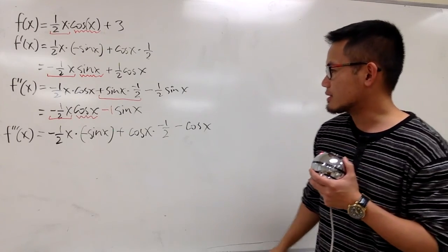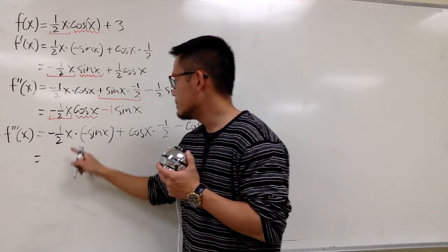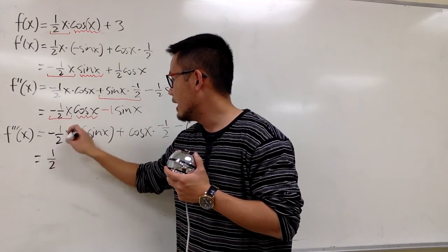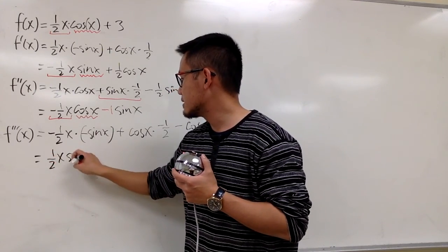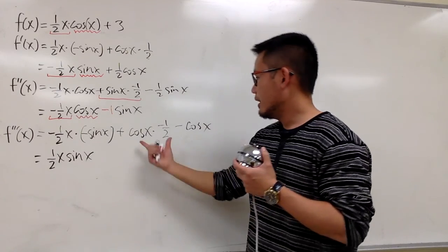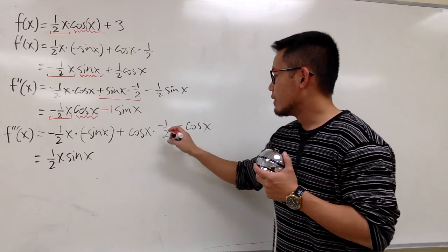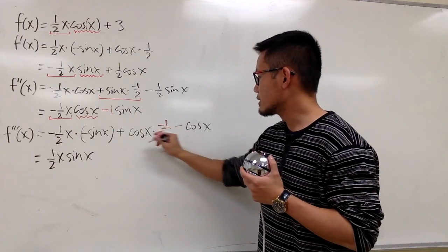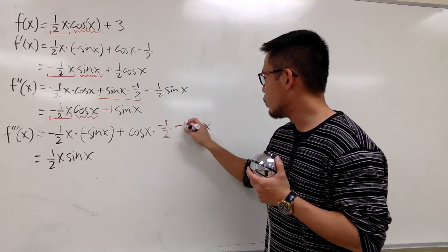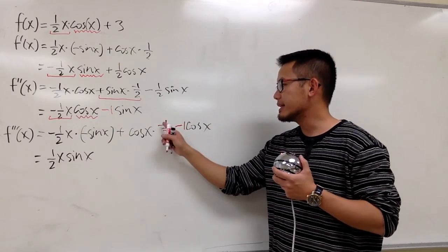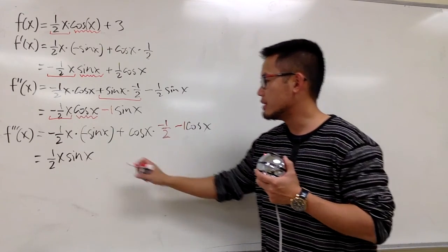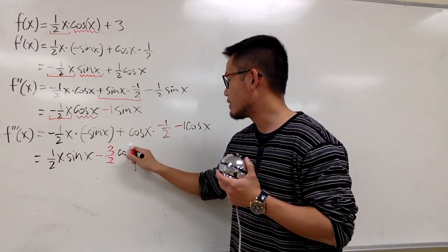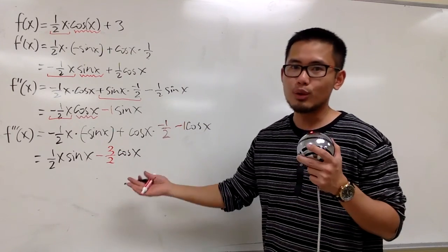Let's simplify. Negative times negative becomes positive, so we have positive ½x times sine x. Then we have negative ½ times cosine x and another negative 1 cosine x. Combining: negative ½ minus 1 gives us negative 3/2, so we have negative 3/2 cosine x. The third derivative is ½x·sin(x) − (3/2)cos(x).